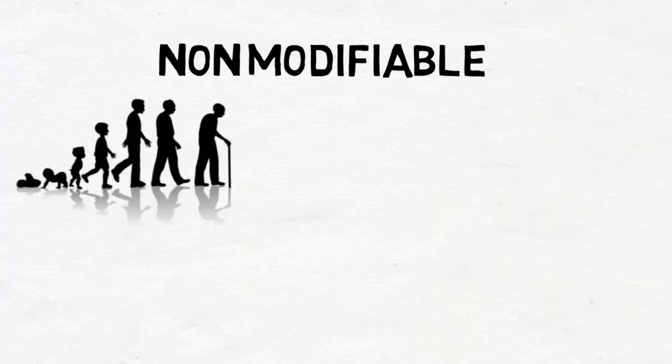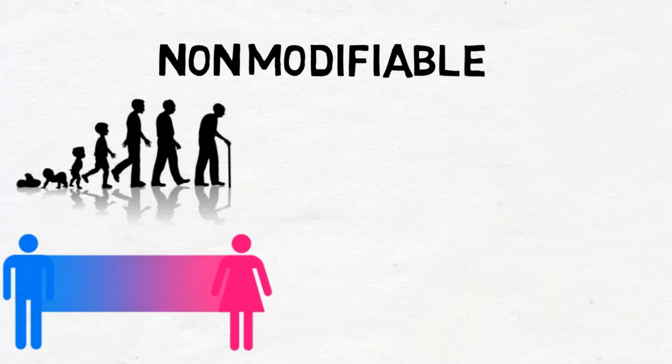The first group are non-modifiable risk factors. These are risk factors that we need to be aware of but we can't change them. They include age — as the older we get, the higher the risk of developing a heart condition — and gender, as men have a higher risk of developing heart disease than women pre-menopause.